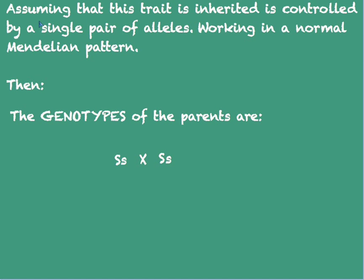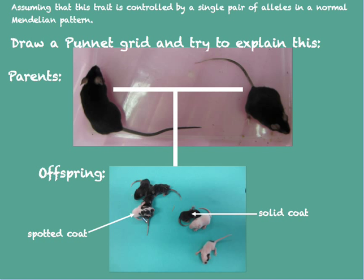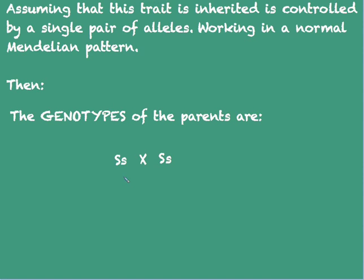If coat color is determined by a single pair of alleles in a normal Mendelian pattern, it means that for a spotted coat offspring to be born, each parent must be able to contribute the recessive allele toward the genotype of the offspring.